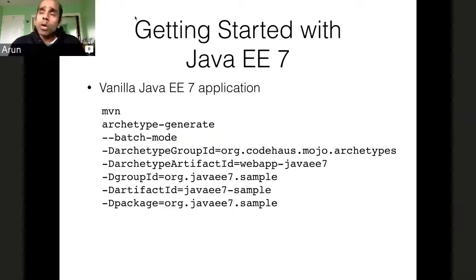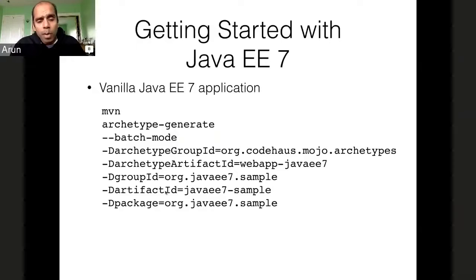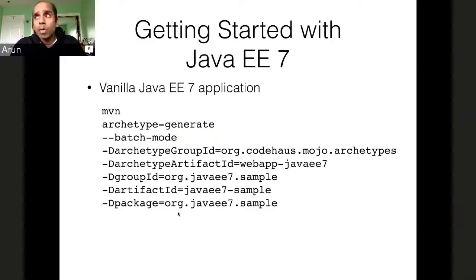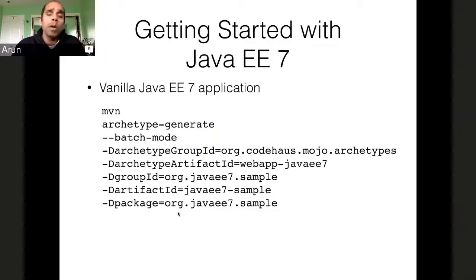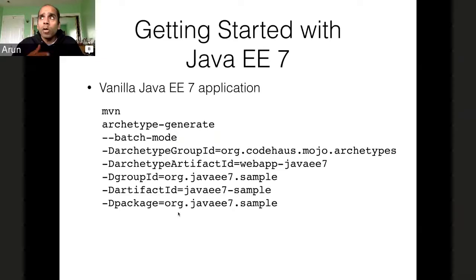If you want to start with a simple Java EE 7 application, there are Maven archetypes available. You say mvn archetype:generate in batch mode, give the artifact ID, group ID, package ID, and it generates a simple Java EE 7 application for you. You can also use JBoss Developer Studio — it's Eclipse with a bunch of JBoss tools plugins installed, all known to work well together. There is also support for Java EE 7 in NetBeans and IntelliJ, so it's pretty IDE agnostic.